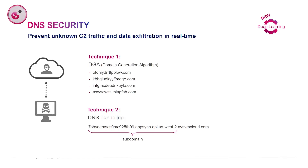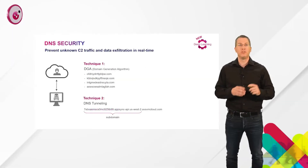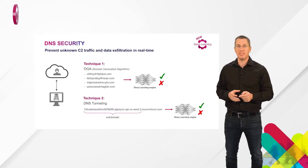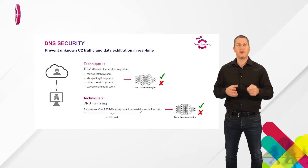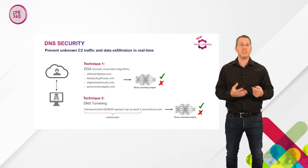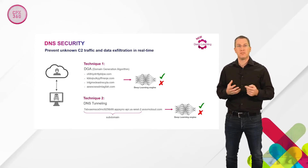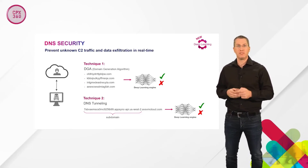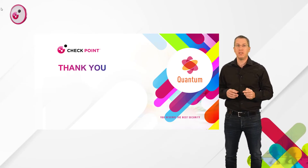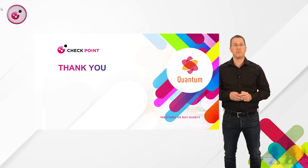ThreatCloud uses two AI-based models to determine whether the domain or the subdomain of a DNS query are legitimate, and if they are used for malicious purposes, then it blocks it. If you have any further questions, feel free to contact me or anyone else from the Threat Prevention Team.